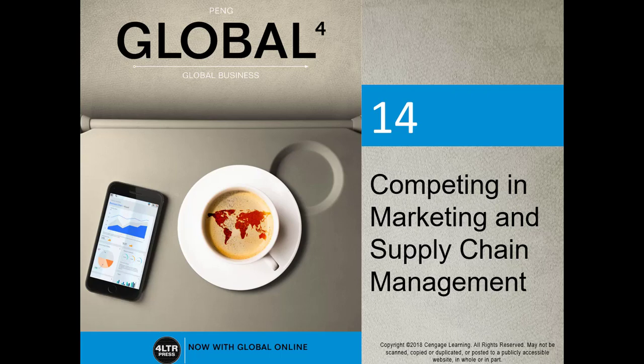Hi, and welcome to chapter 14. In this chapter, your author is kind of splitting the four P's — for those of you who remember them from Business 10, the four functions of marketing, also known as the marketing mix. What he does here is taking the chapter, titled Competing in Marketing and Supply Chain Management. Three of the four P's belong in one place, and one is separate. The supply chain management obviously is place of distribution, and product, promotion, and price are embedded within the first part, marketing.